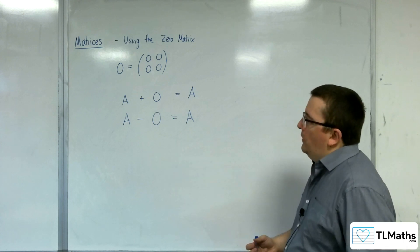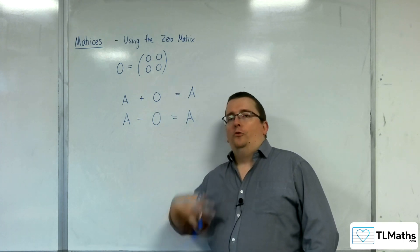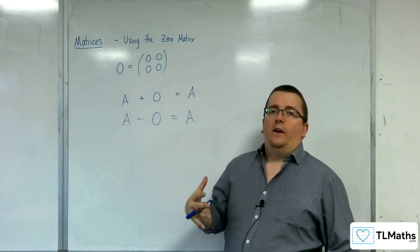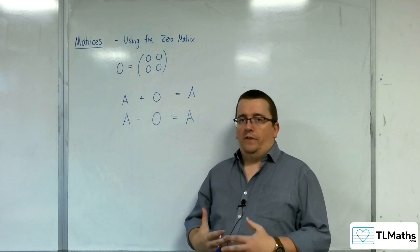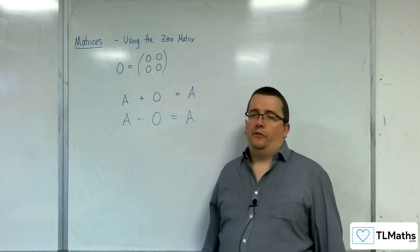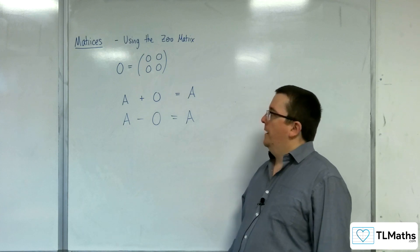So, it is the matrix that I can apply to another matrix under addition or subtraction that gives me the original result, okay, that does nothing. That's what the zero matrix is really there to do, okay?